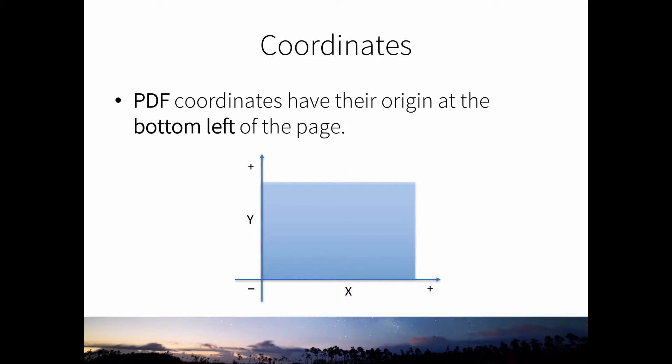An important thing about place contents: the coordinates within a PDF have the origin at the bottom left, so the Y axis increases going upwards. In an HTML page it goes downwards, with content originating from the top left. This is important because you need to identify where to place your content — if you want to move content upward, use Y plus, not Y minus.